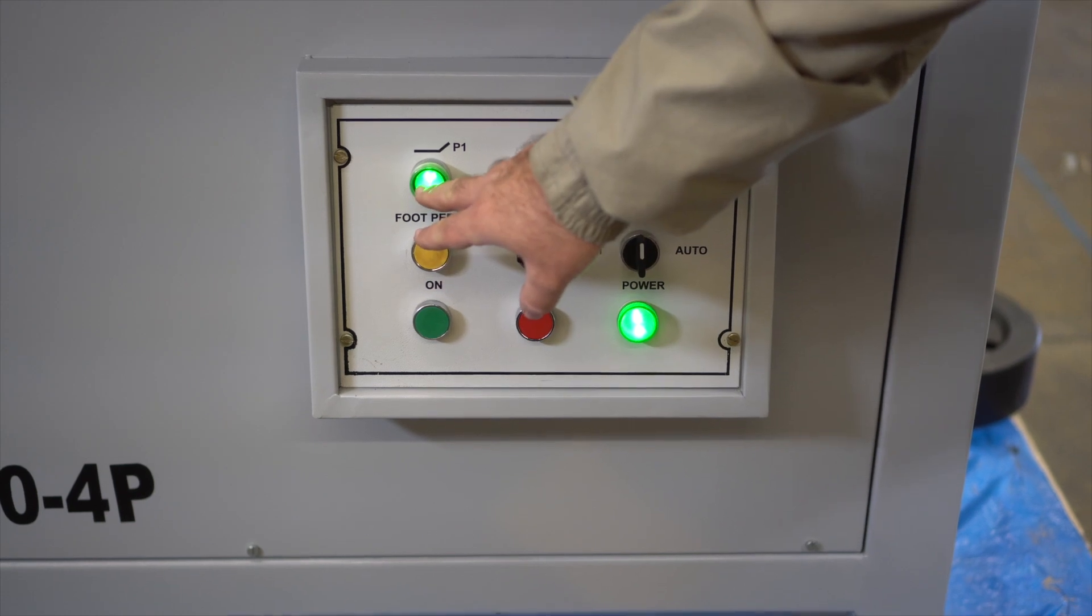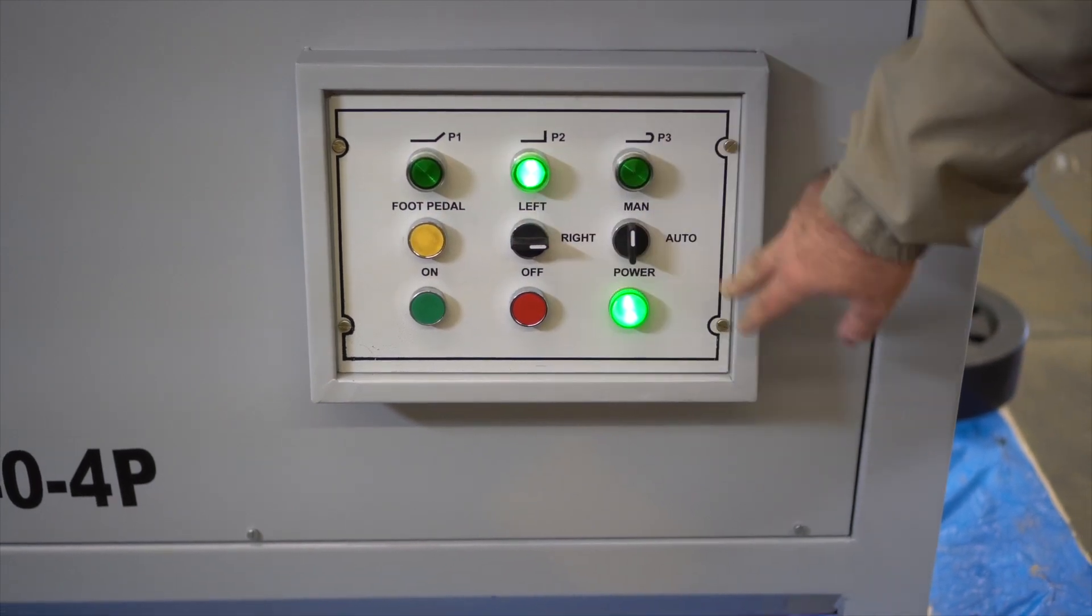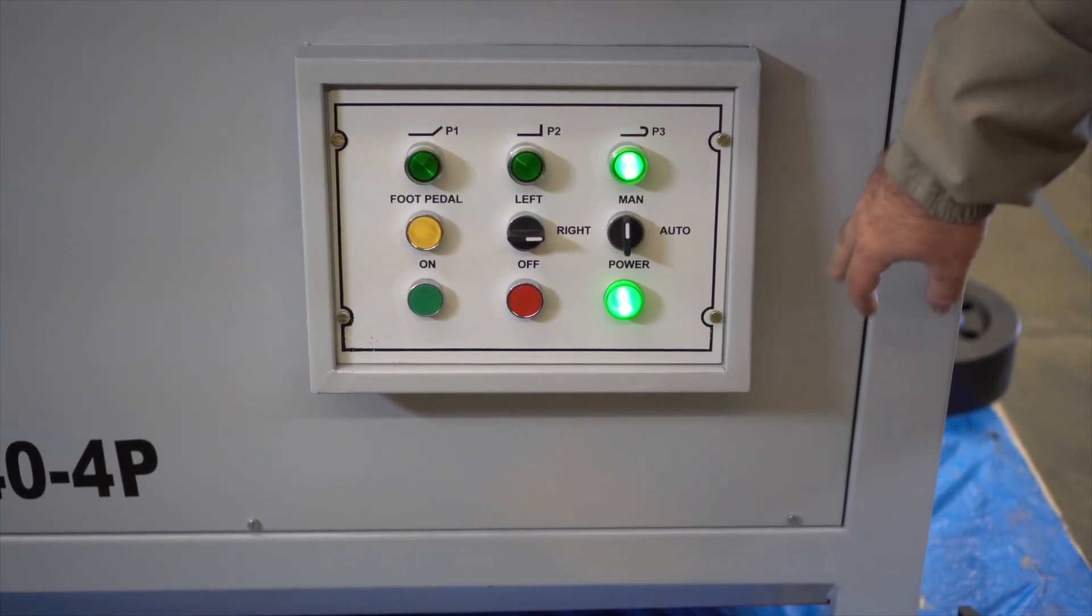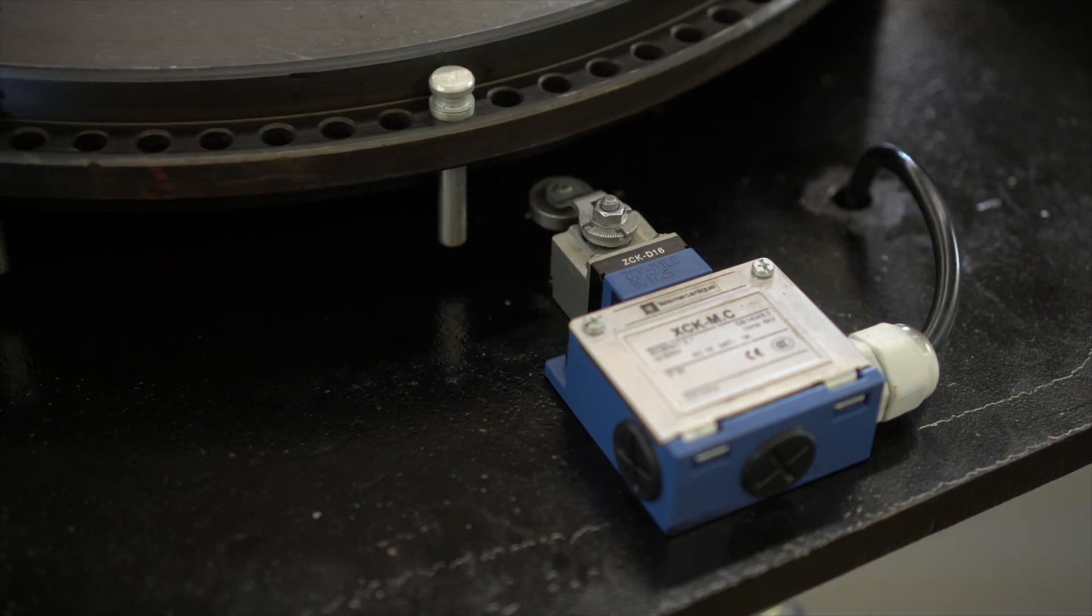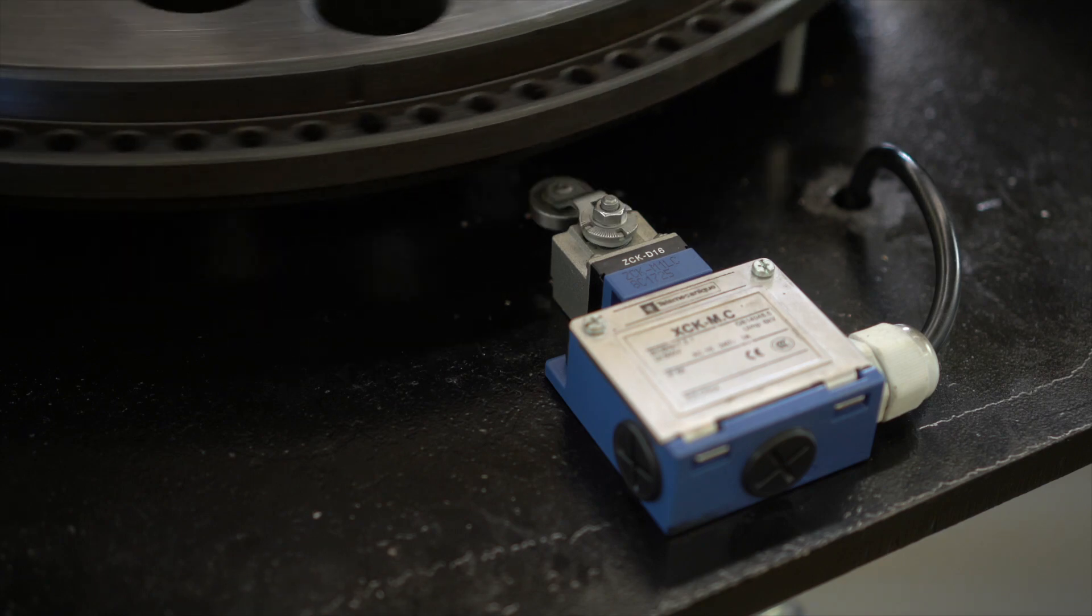These three buttons represent the three different pin selection options. Using P3 for example, you can see how the sensors operate. As it strikes the third pin, the unit comes to a stop.